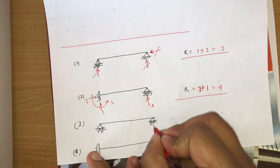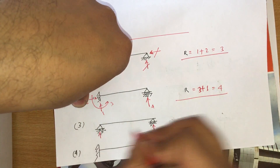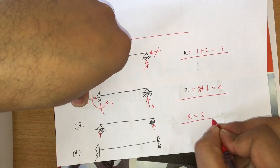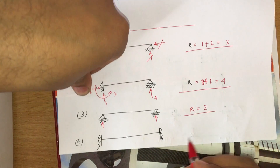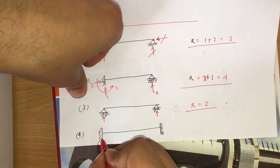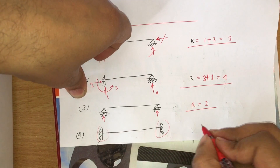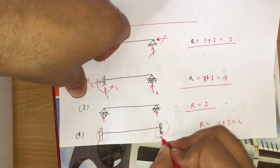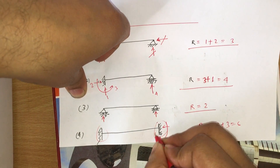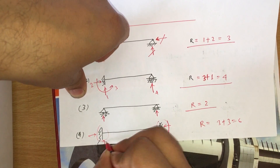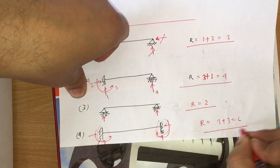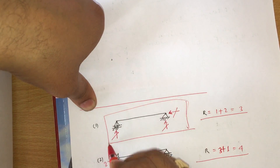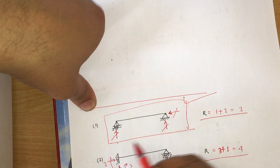For example three — roller plus roller — one reaction each, so R equals 2 total reactions. For example four — fixed plus fixed — R equals 3 + 3 = 6 reactions total: reactions 1, 2, 3 on each side.